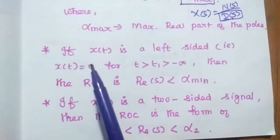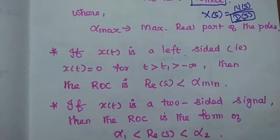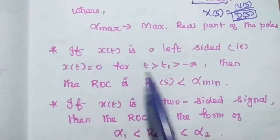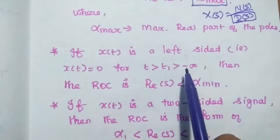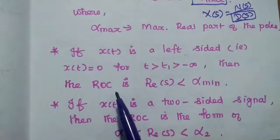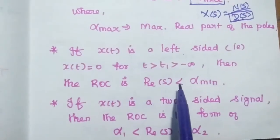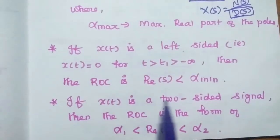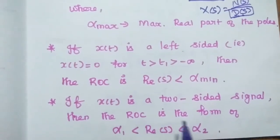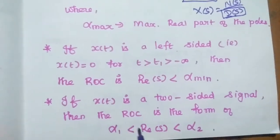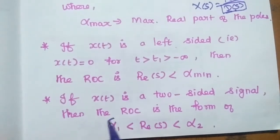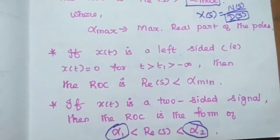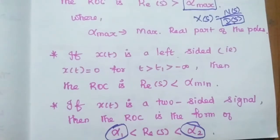The next property is: if X(t) is a left-sided signal — that is, having zero value for t less than zero, in the negative side — then the ROC is less than the minimum of its pole value. If X(t) is a two-sided signal, then the ROC is of the form where the real part of S is between the minimum pole value and the maximum pole value. Let's solve some problems to understand these properties better.